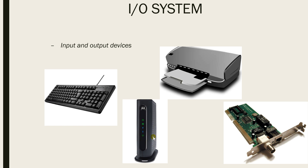What a modem does is send digital data over a phone line. You'll have two modems — one at the sending side and another at the receiving side. The sending modem modulates the signal to one compatible with the phone signal, and the receiving modem demodulates it back into digital data. You also have a network interface card that connects your computer to a network.